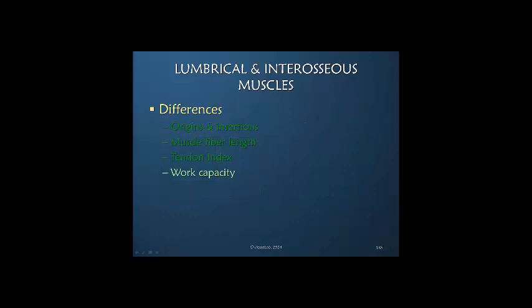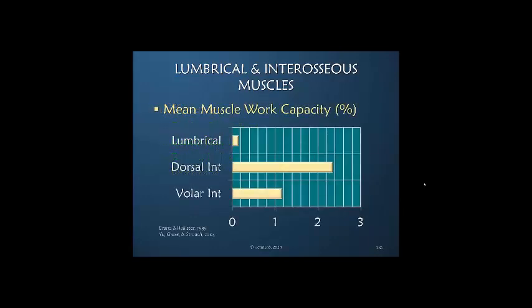Work capacity — the ability to do it over and over, to stay with it, and to contribute power. The dorsal interosseous are great workers, even more than the volars, while the lumbrical is insignificant by comparison. The dorsal and volar interosseous muscles work and contract against resistance, whereas the lumbrical extends the IP joints where there's almost never any resistance, so the lumbrical doesn't have to work very hard.